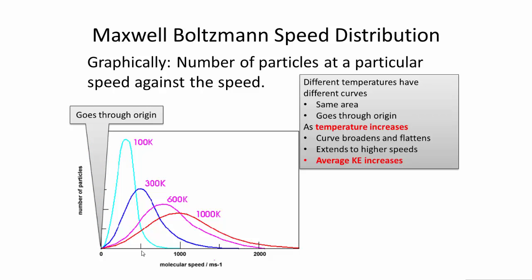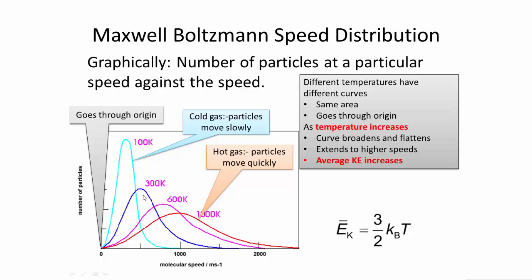So all of the graphs go through the origin. The cold gas has particles which are basically moving slower than the particles in the hot gas. The hot gas, the particles move quickly on average. And of course you can see by looking at this area here that indeed some of the particles in the 100 Kelvin gas are actually moving faster than the average for the 300. But it's basically a statistical analysis here. We're looking at the average.